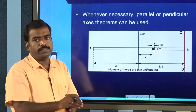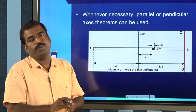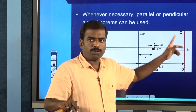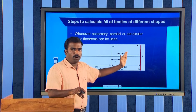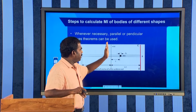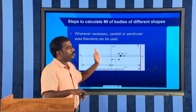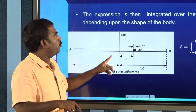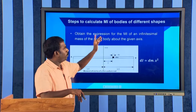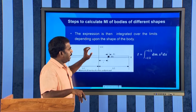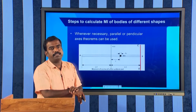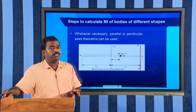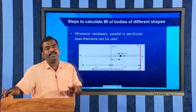The third step: whenever necessary, use the parallel axis or perpendicular axis theorem. For example, if you want to find the moment of inertia about axis CD and you know the moment of inertia about an axis passing through the center of mass, use the parallel axis theorem. So these are the three important steps: obtain the expression for the small element, integrate it, and apply the axis theorems whenever necessary.